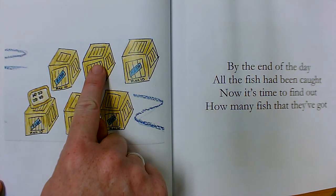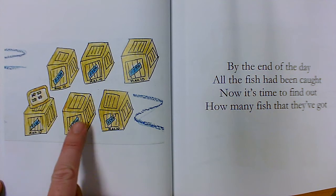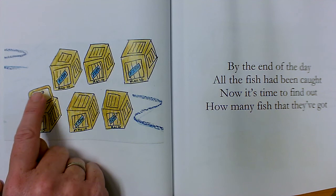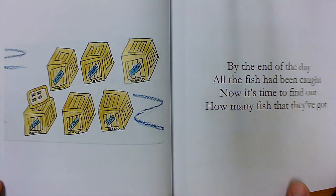10, 20, 30, 40, 50, 60. 61, 62, 63, 64. They have 64 fish.